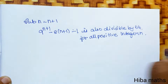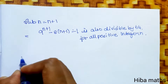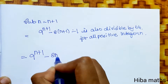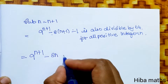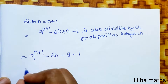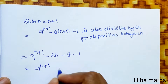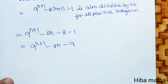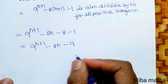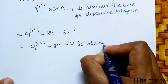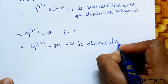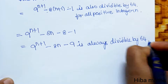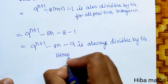Expanding: 9 power n plus 1 minus 8 into n plus 1 minus 1 equals 9 power n plus 1 minus 8n minus 8 minus 1, which equals 9 power n plus 1 minus 8n minus 9. This is exactly the expression in the question. Therefore, 9 power n plus 1 minus 8n minus 9 is always divisible by 64. Hence proved.